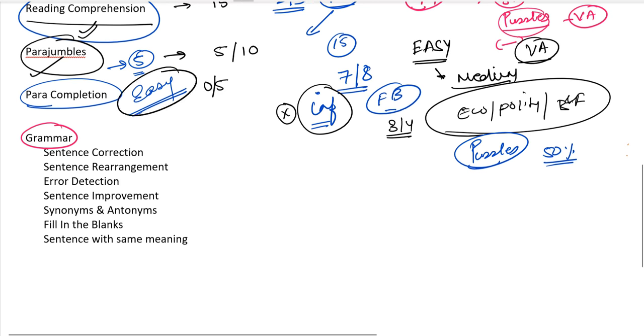If you look at puzzles also, 50% of the time puzzles aren't read properly. But the good thing is you don't have to read word by word - you have the data, you take the data out and you can do it. But that's not happening in RC or para completion - you have to read it, that's the major problem. This is something you can improve by practicing. It's easy, trust me, very easy.